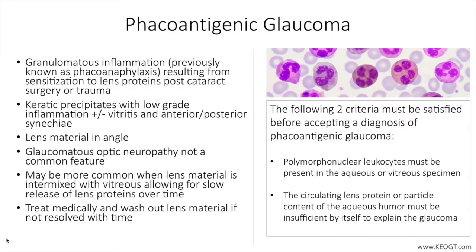Phacoantigenic glaucoma is a granulomatous inflammation resulting from sensitization to lens proteins post-cataract surgery or trauma. The previously used descriptor was phacoanaphylaxis; however, this term is no longer used since the disease process is not an allergic response.